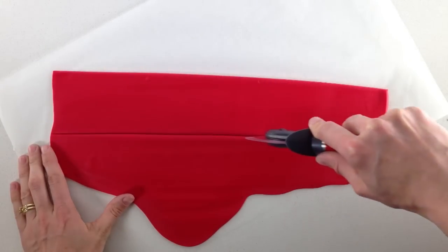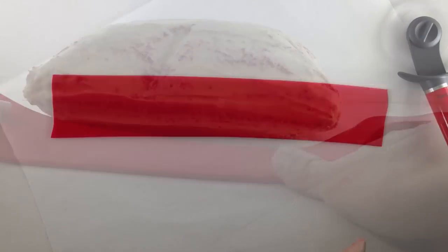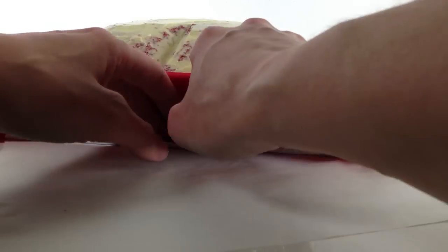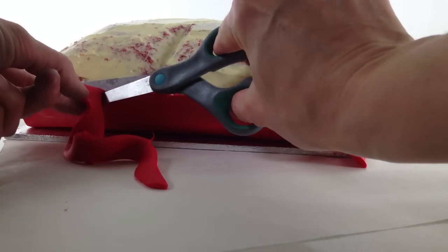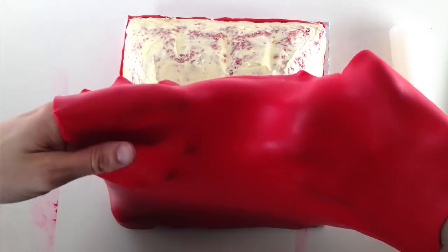Roll out some fondant in the color that you want your pillow to be and cut a long strip and place it under one side and press it onto the frosting. Then using some scissors, trim it at the corners and along the cake at the 3cm level. Repeat that on each side and then cover the top of your cake in fondant.